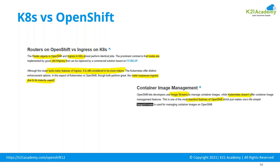Another standout feature is container image management. In OpenShift there's something called image stream, which is used to manage containers. Kubernetes doesn't offer anything like this. Managing container images can be very challenging from a developer background, and image stream makes developer life very easy. This is one of the most standout features of OpenShift.